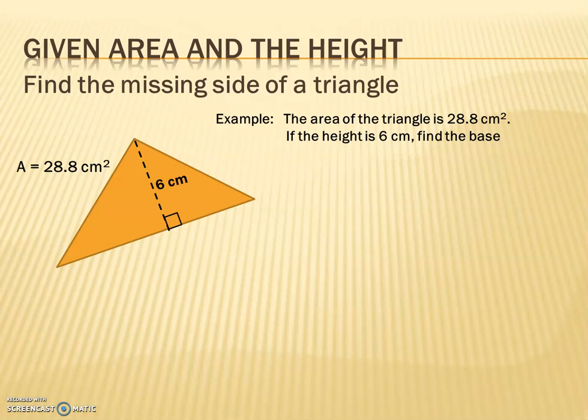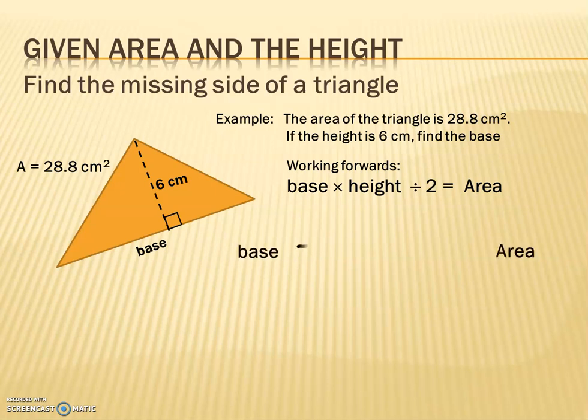If we knew the base, the calculation for this would be base times height divided by 2 to get the area. So let's build a roller coaster for this: you take the base and to get to the area you would multiply by the height, and then you would divide by 2 and that would bring you to the area.